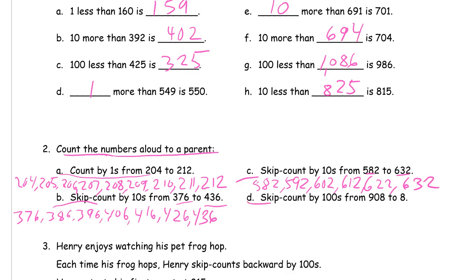Then we're skip counting by hundreds from 908 to 8, going backwards by hundreds: 908, 808, 708, 608, 508, 408, 308, 208, 108, and 8.